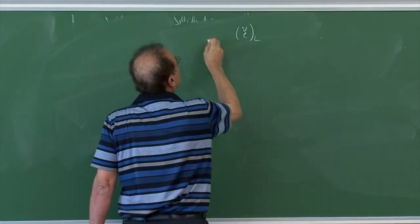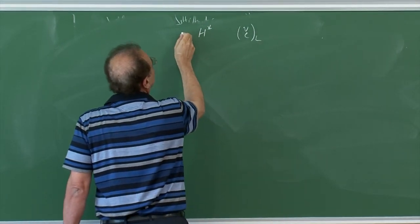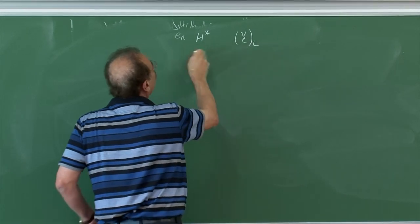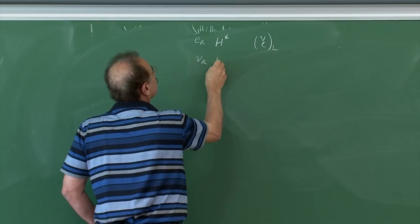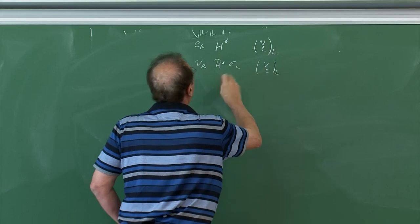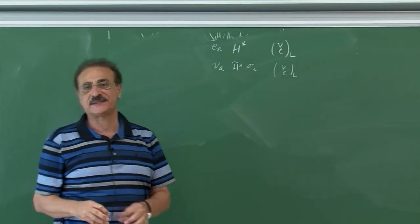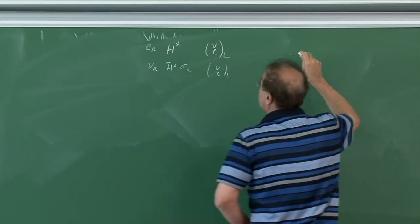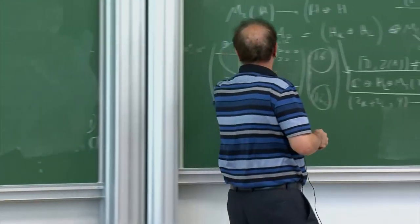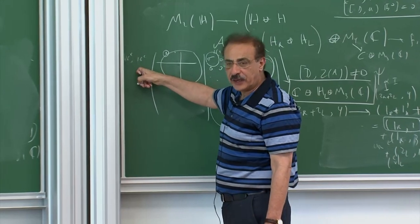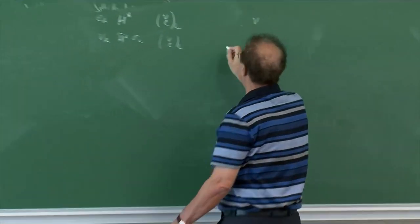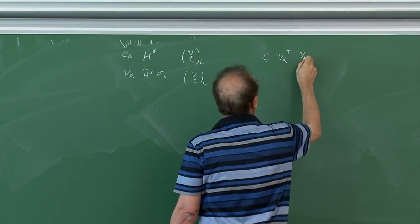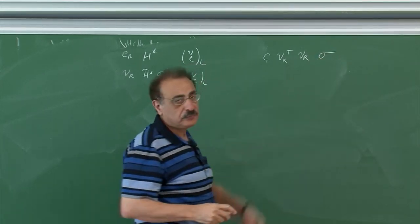Most importantly, because of the sigma field, one gets an additional Majorana mass for the right-handed neutrino: σ_R^T C ν_R coupled to sigma, where C is the charge conjugation matrix. This will give an explanation for why neutrino masses are extremely small — the current upper limit is something like 10⁻² eV.